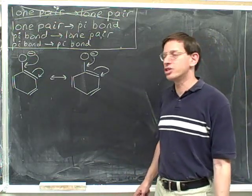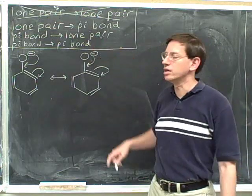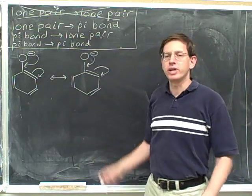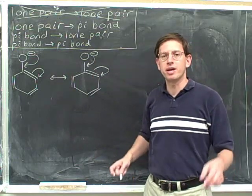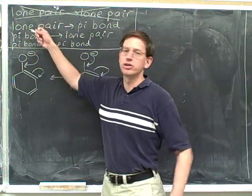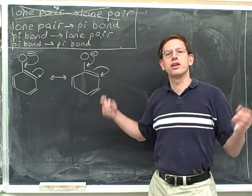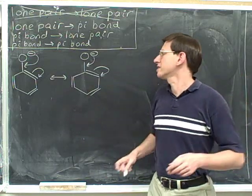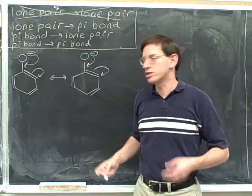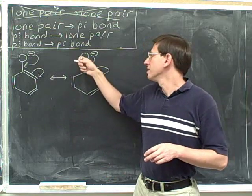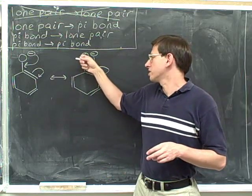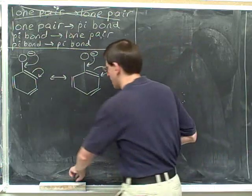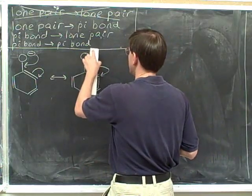We begin at the initial tail. Here's the initial tail. Where are the electrons coming from? The tail is pointing to a negative formal charge. We know that means the electrons are coming from a lone pair. Since the lone pair wasn't drawn in the first place, we don't need to erase it. But since this is the initial tail, we need to change the charge on this atom — oxygen.